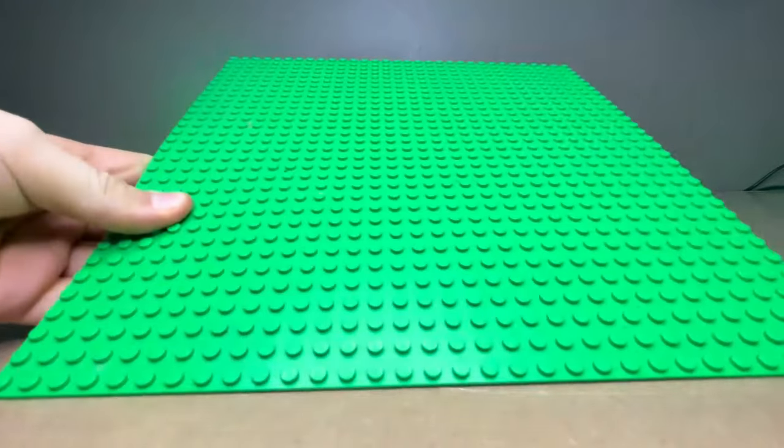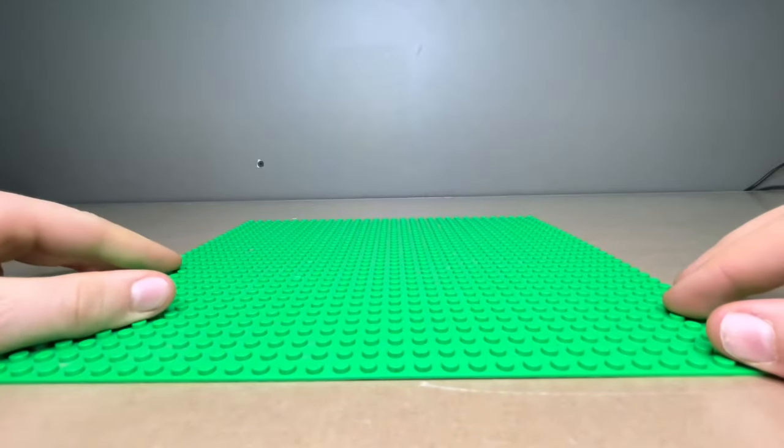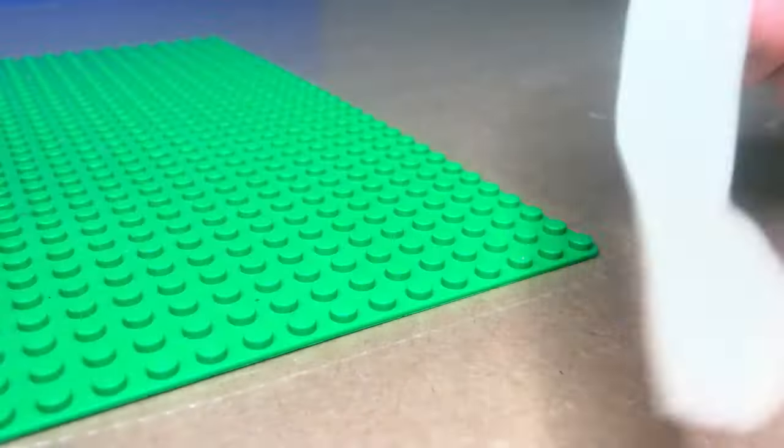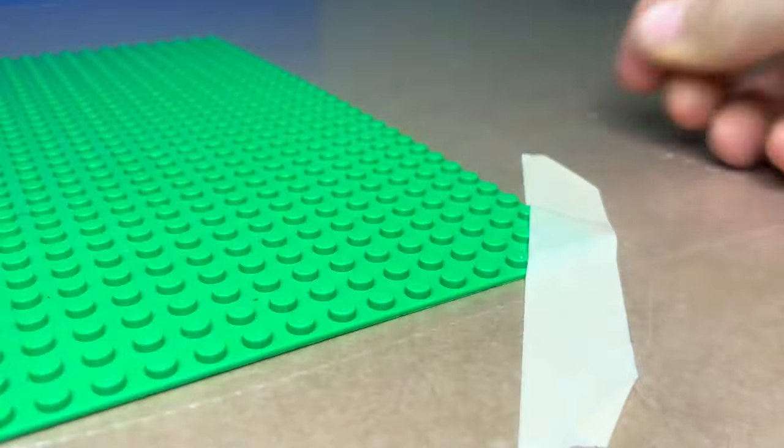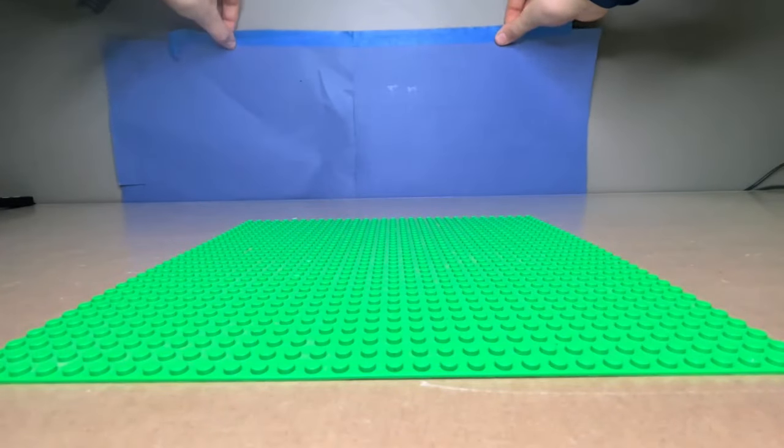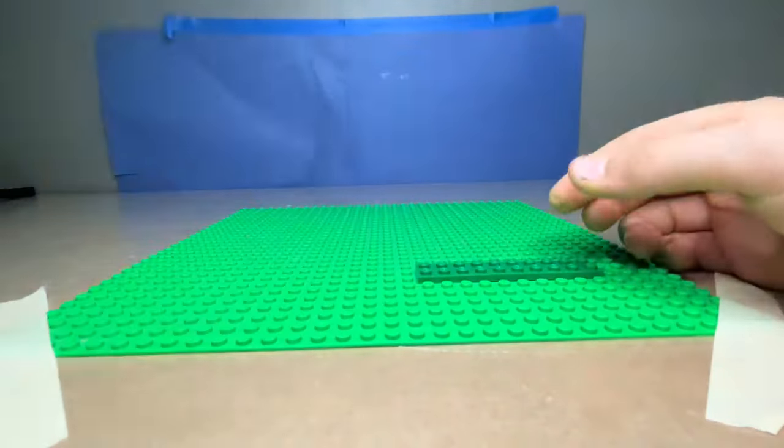Step one: first you'll need a base to build your scene on, and you're going to tape it in so it doesn't move around when you're filming. Step two: now add a background. Here I just used blue construction paper.